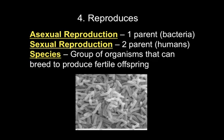Two organisms that can reproduce sexually and produce a normal offspring are part of what's called a species. A species can only reproduce within the same species. However, there are a few exceptions, such as a liger, which is a tiger-lion combination, a mule, which is a cross between a donkey and a horse, and even brown and polar bear crosses.